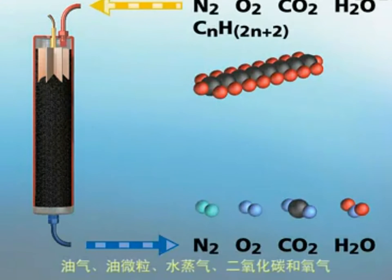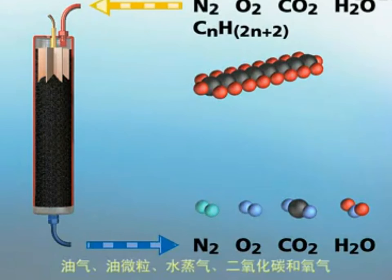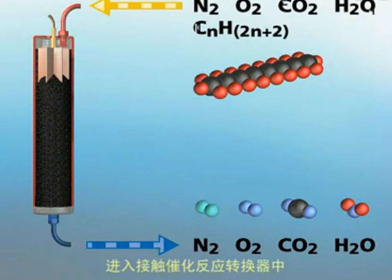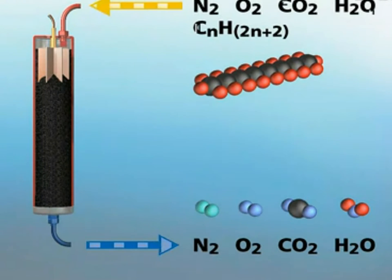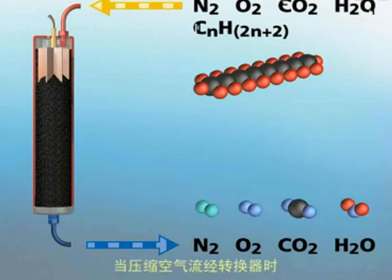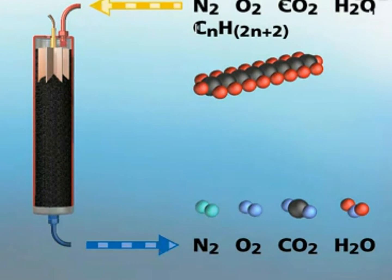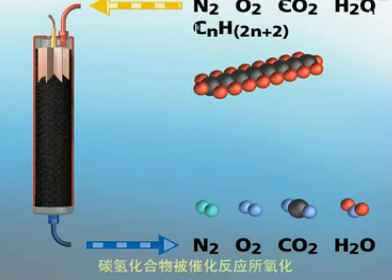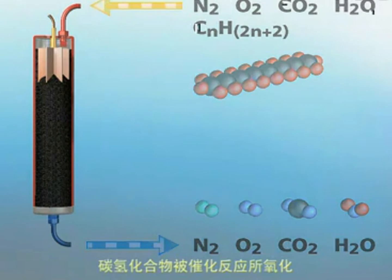Oil vapour, oil aerosols, water vapour, carbon dioxide and oxygen are entering the catalytic converter. When the air flows through the converter, the hydrocarbons are catalytically oxidized.